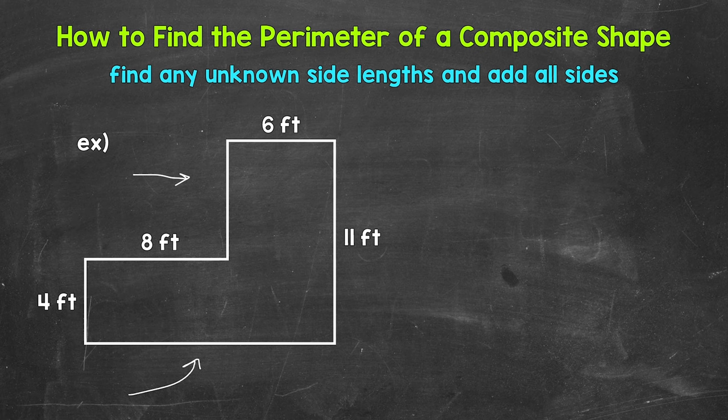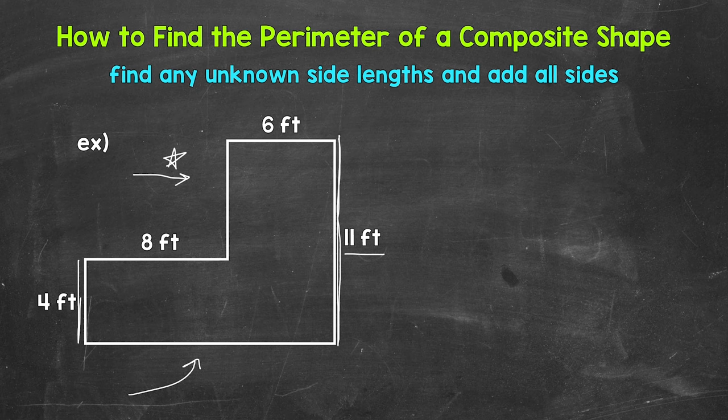We need to use what we know — what we are given — to figure out what we do not know. For example, we know that this vertical side right here measures 11 feet. We can use that to figure out what this missing side equals. We know that 4 feet plus what will give us that 11 feet. Well, 4 feet plus 7 feet equals 11 feet, so that missing side length equals 7 feet.